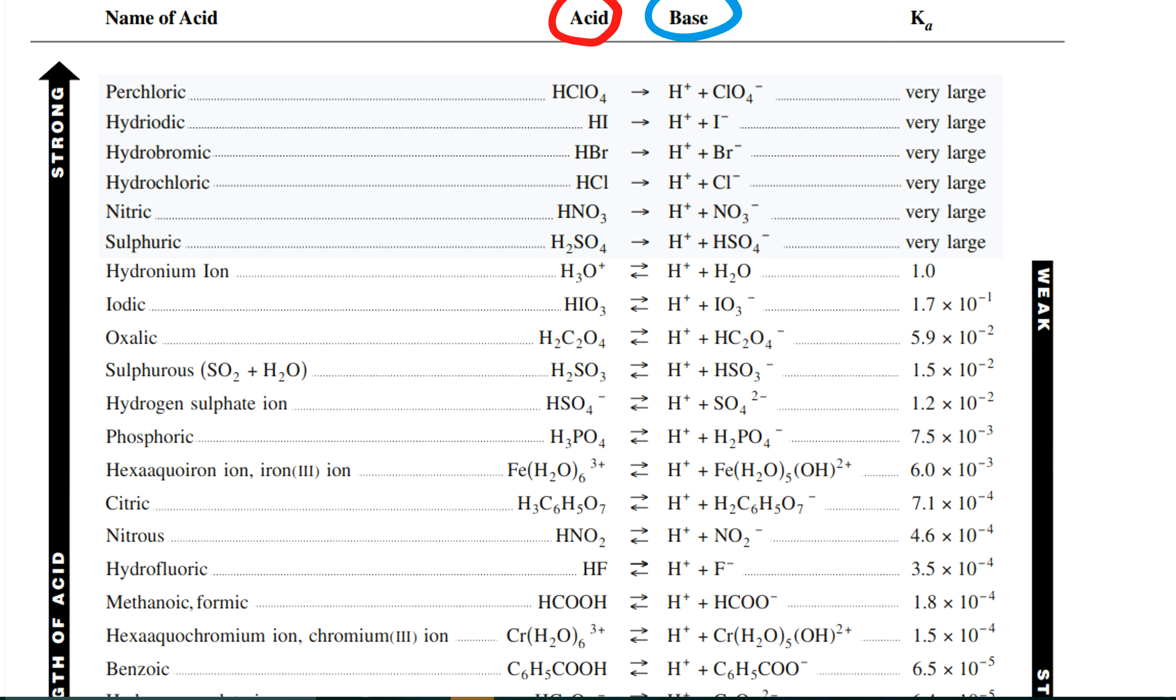We know that HSO4- has an H, so it should be able to act as an acid. So we'll go down the acid column, and we notice that there it is right there. Now if you look for the base form, go down the base column, and here it is here.